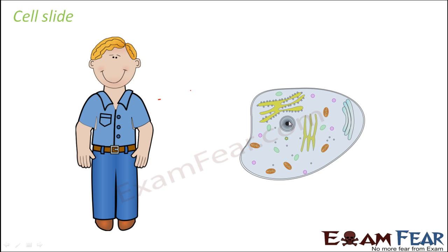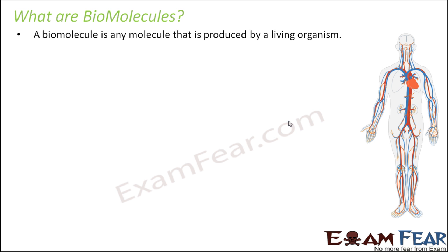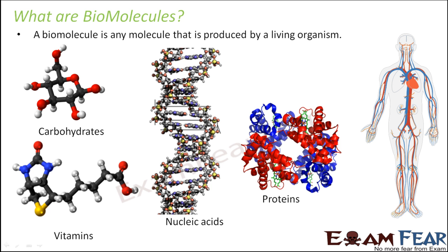In this lesson we are going to talk about the structure and properties of each of these biomolecules. Bio is anything related to life or a living organism, so any molecule that is produced by a living organism is a biomolecule. Proteins, lipids, DNA, RNA — they together form a living organism, and they are produced inside a living organism. Some examples of biomolecules are proteins, nucleic acids, carbohydrates, and vitamins. We are going to talk about the function of each of them, their structure, and what they are made up of.